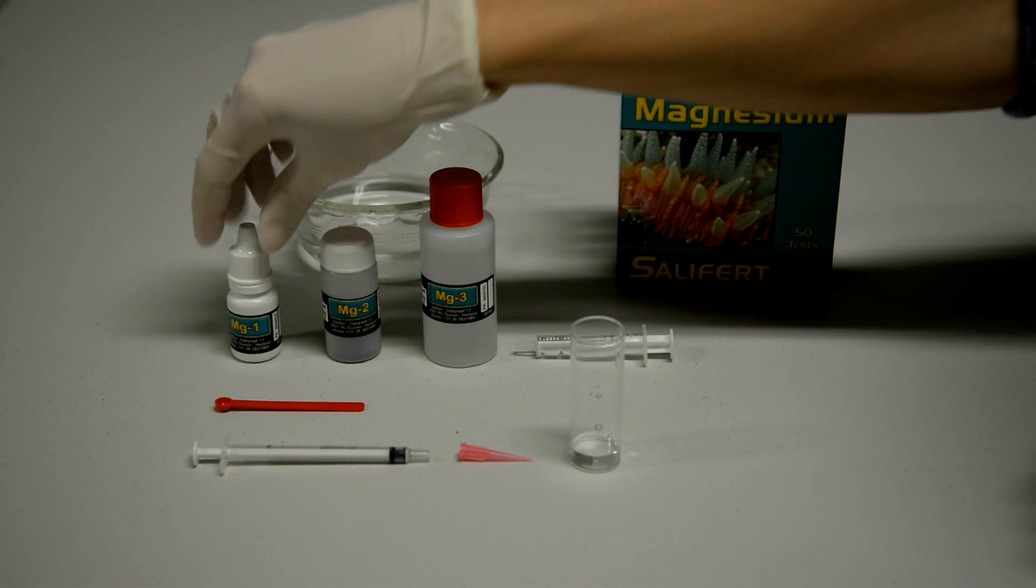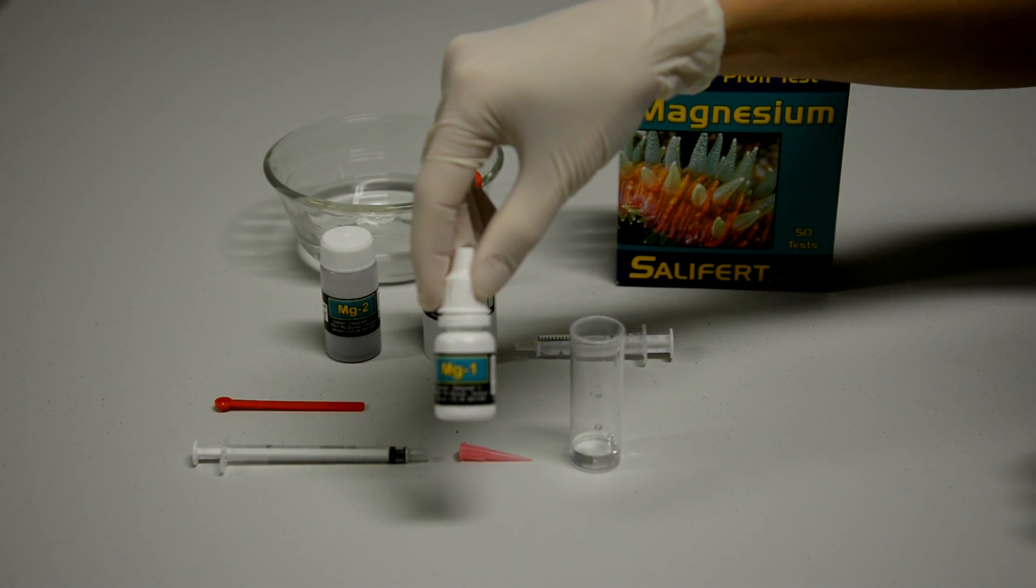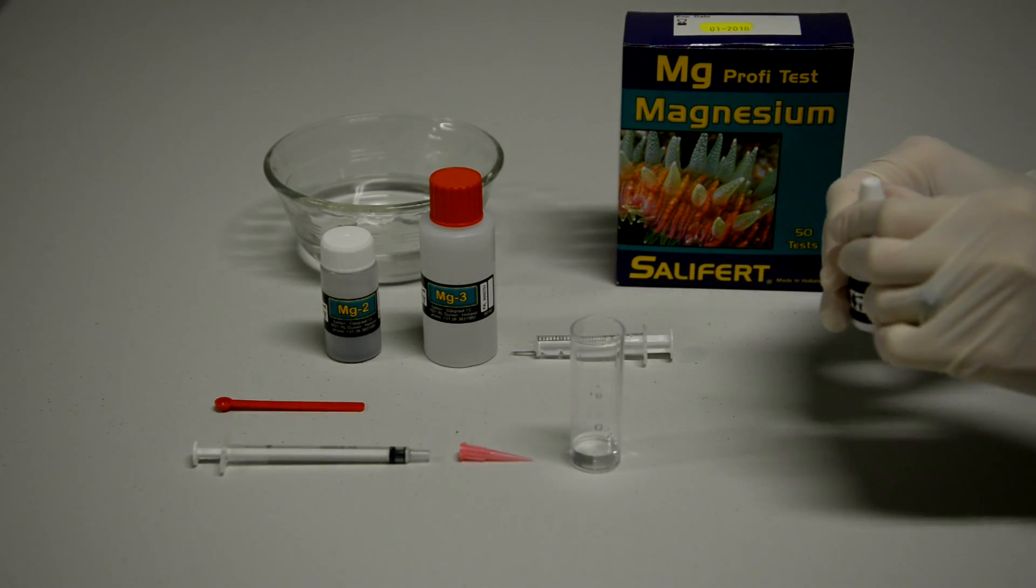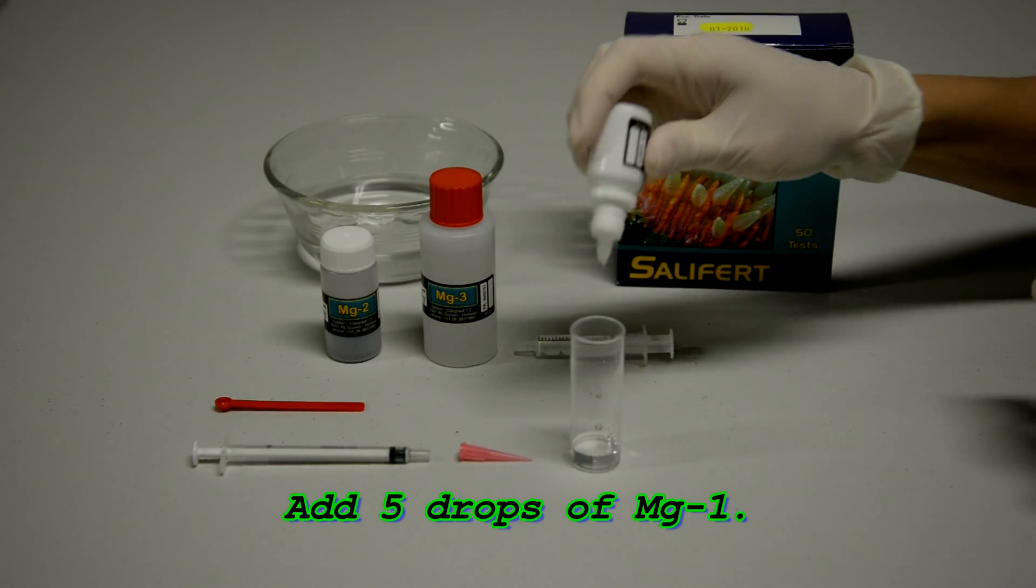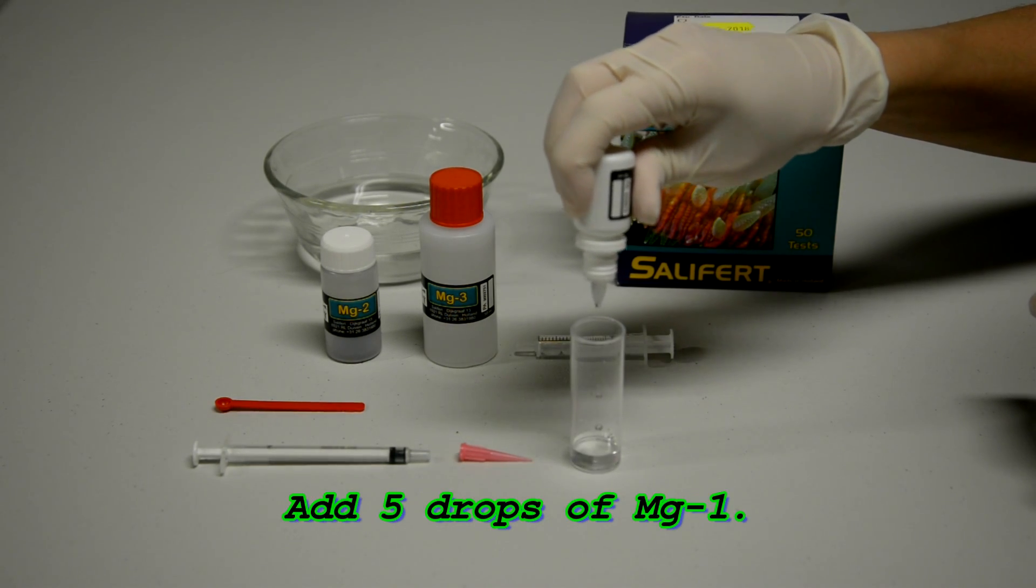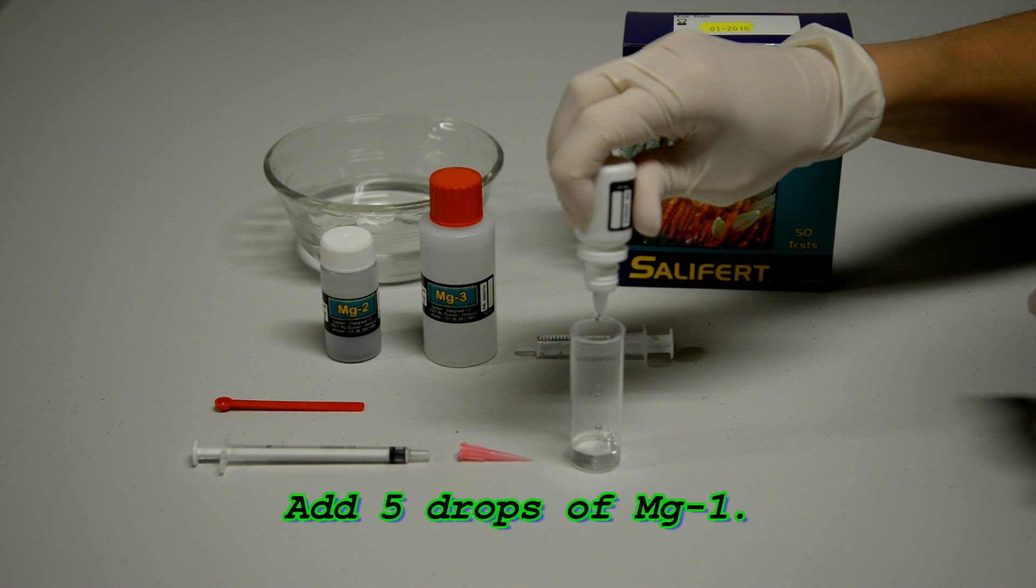After that, they've labeled them nicely in order, we're going to add magnesium 1. So when we add this, we want to be sure that we're holding our dropper as straight up and down as possible, add five drops.